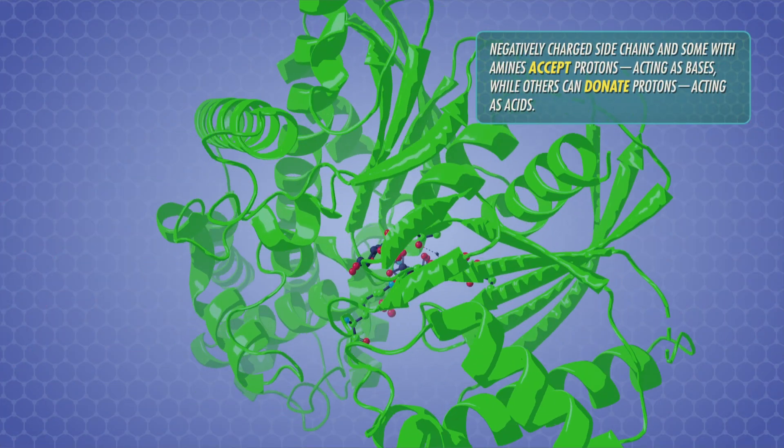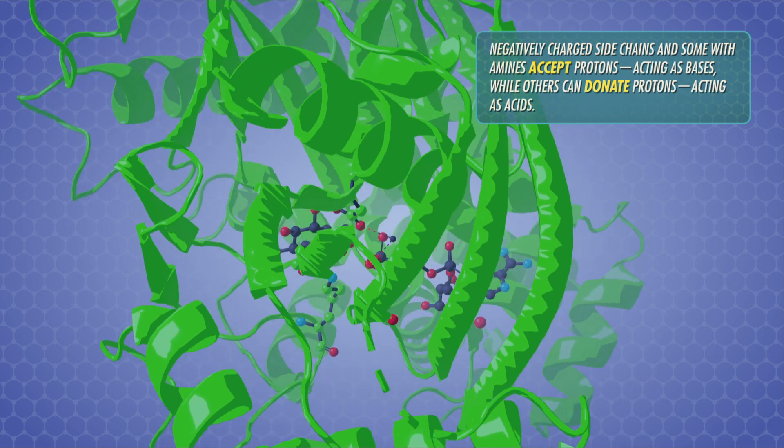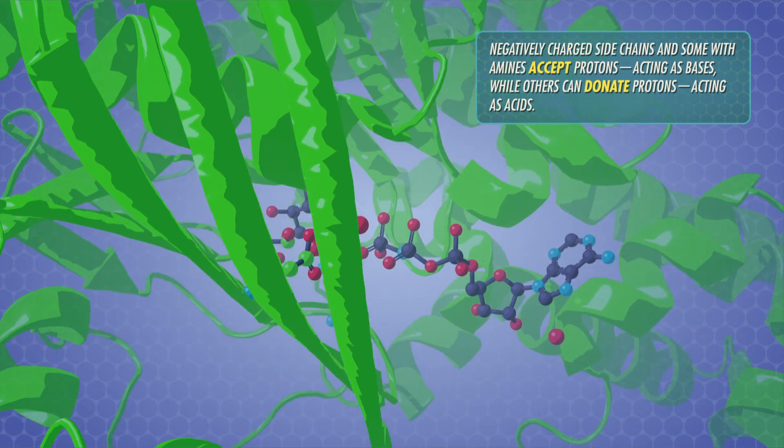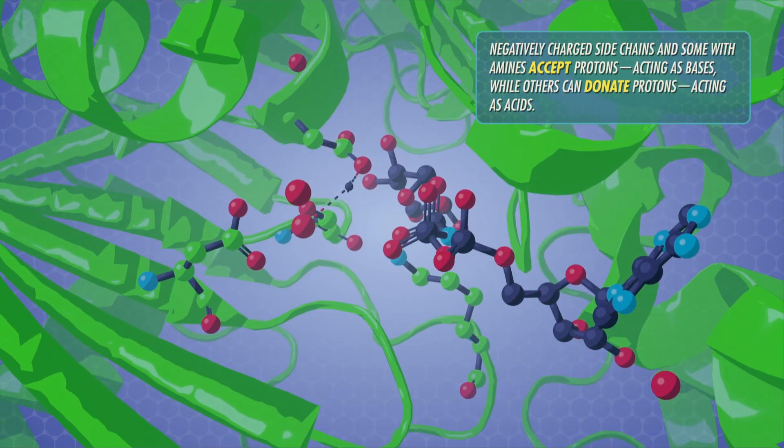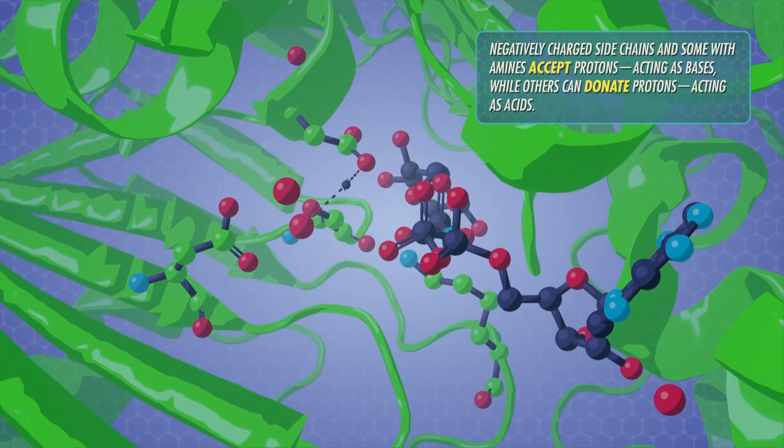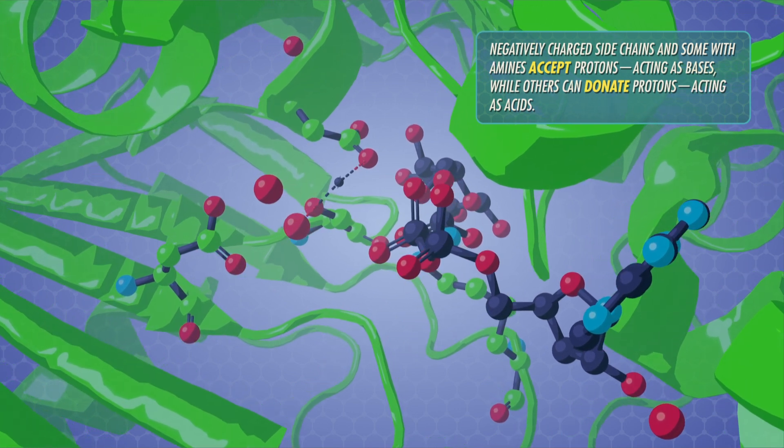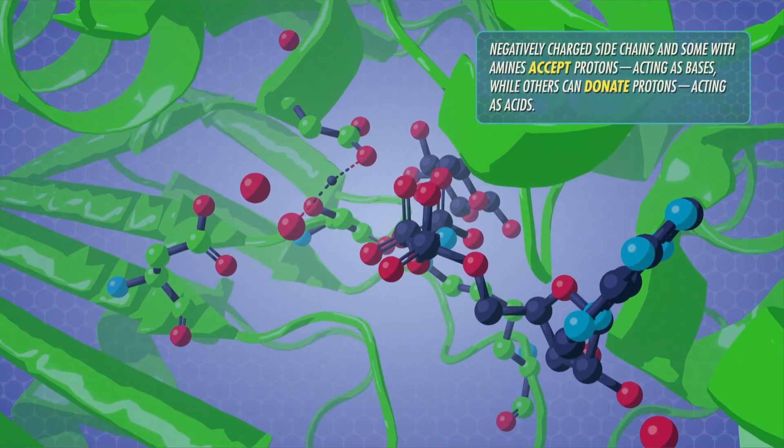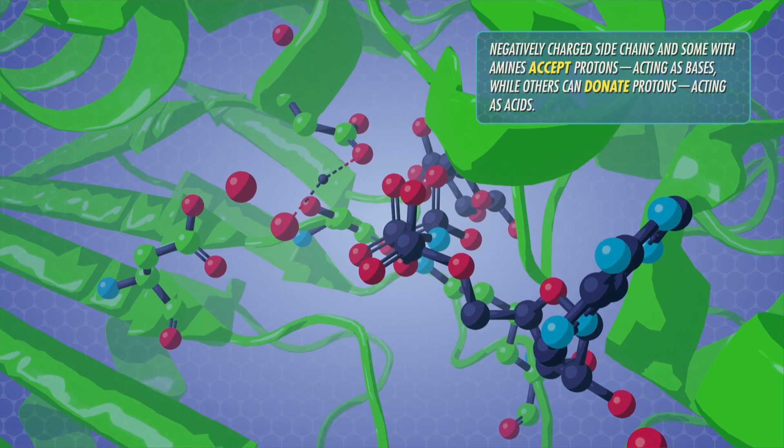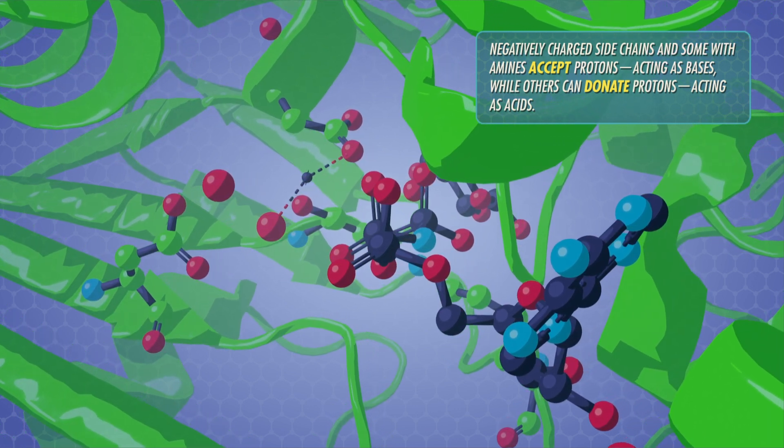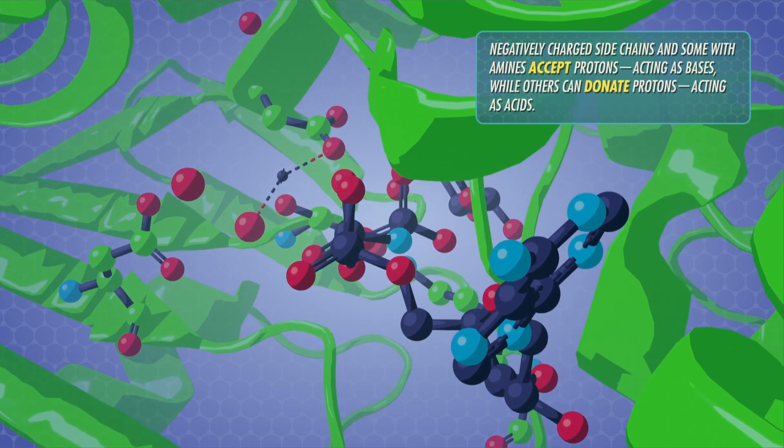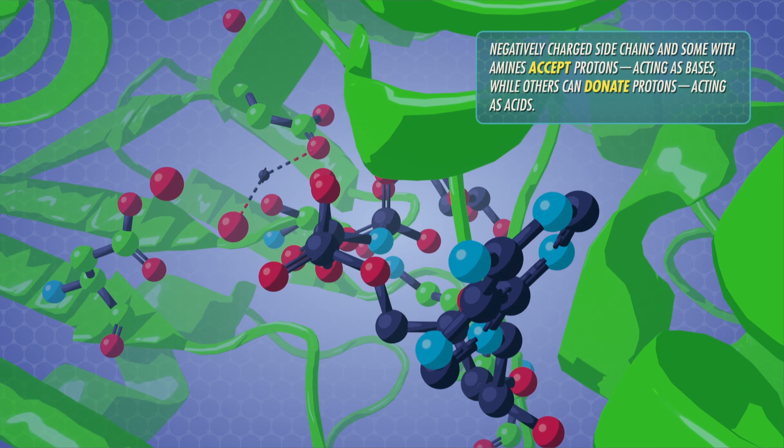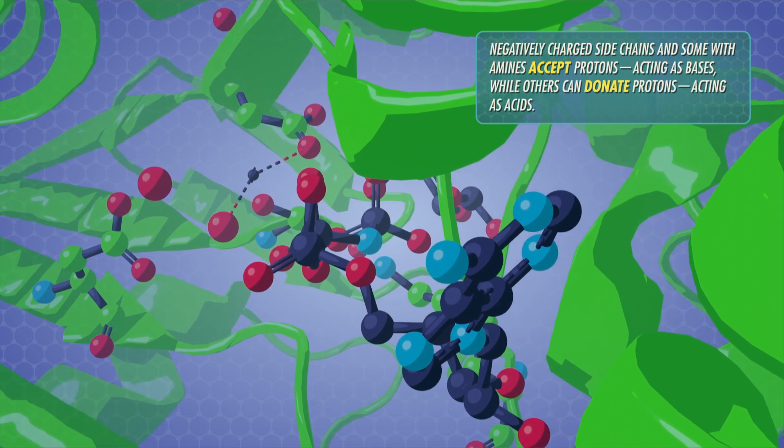Enzymes really are like little machines. They bind a reactant in an active site, where the chemical reaction takes place. There, carefully positioned side chains of the amino acids that point in the active site get to work. By that I mean those side chains allow an enzyme to do acid and base-catalyzed reactions in a gentler way. For example, negatively charged side chains in some amines accept protons acting as bases, while others can donate protons acting as acids. Some side chains can even act as nucleophiles to speed up a chemical reaction.